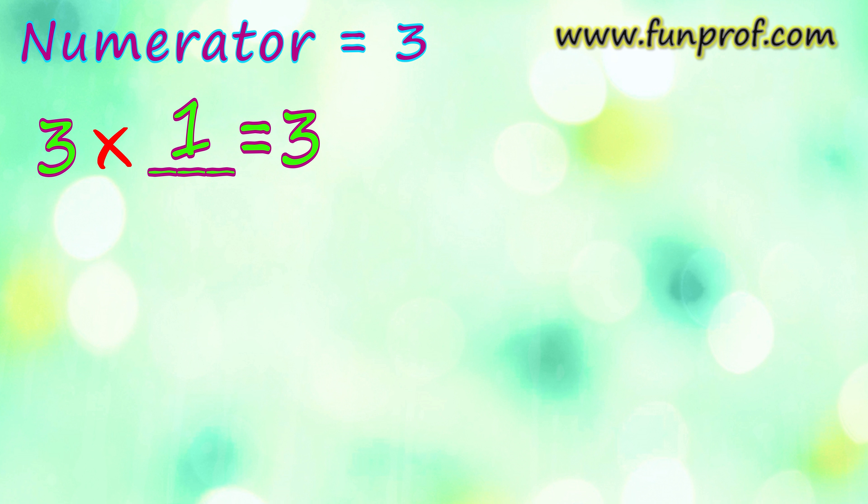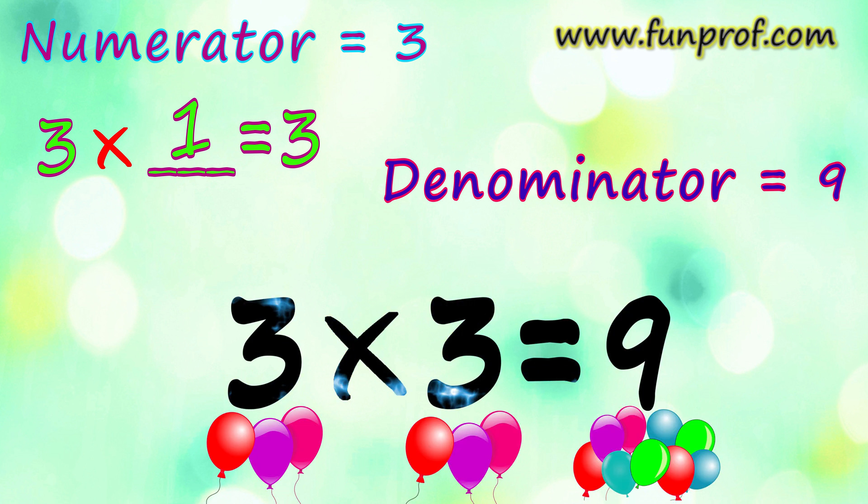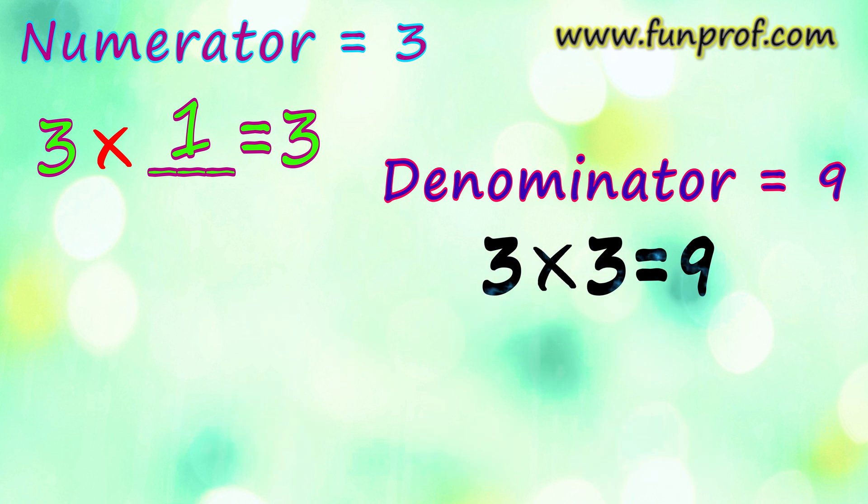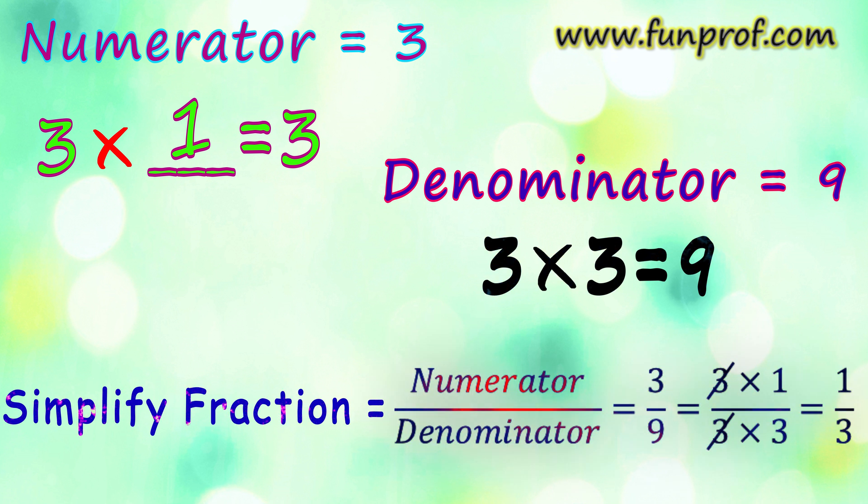Now, we will talk about the denominator. It's the same. We will multiply 3 and 3. So, it will make 9. Now, we will cancel out 3 and 3. It will make a simplified fraction: 1 by 3.